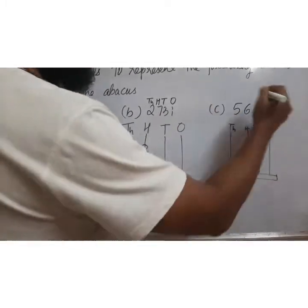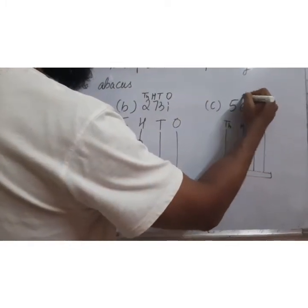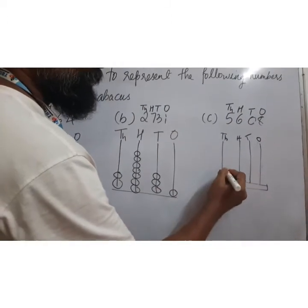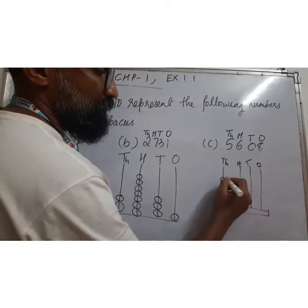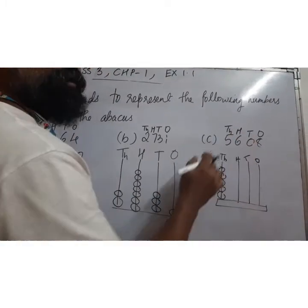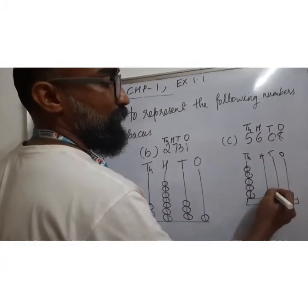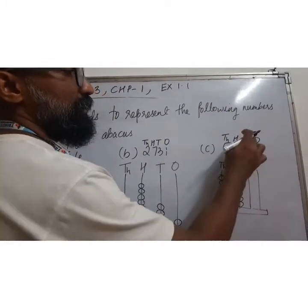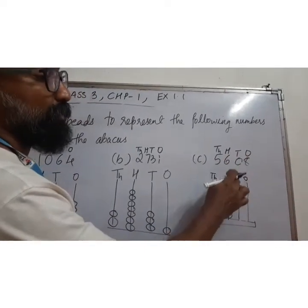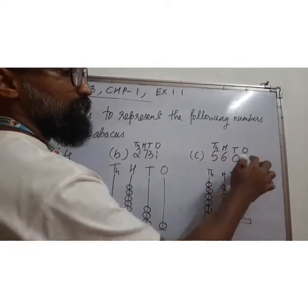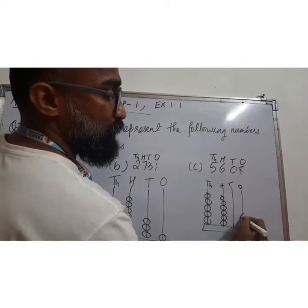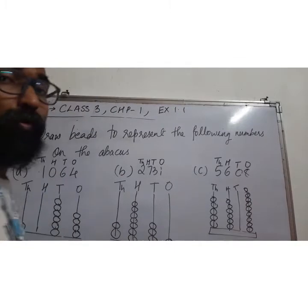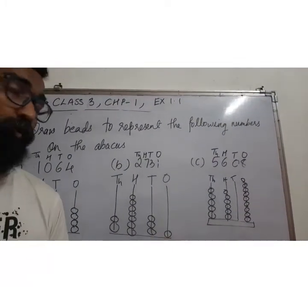We will do now the third one. Place value: ones, tens, hundreds, thousands. 1000, you have to make 5 beats. 1, 2, 3, 4, 5. In hundreds place have to make 6 beats. 1, 2, 3, 4, 5, 6. 1, 2, 3, 4, 5, 6, 7, 8. So I am sure this is very easy for you people to do it.